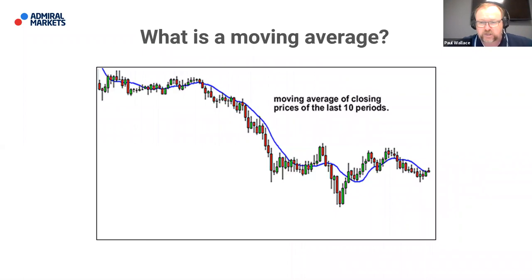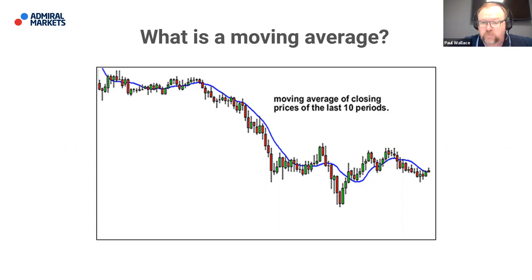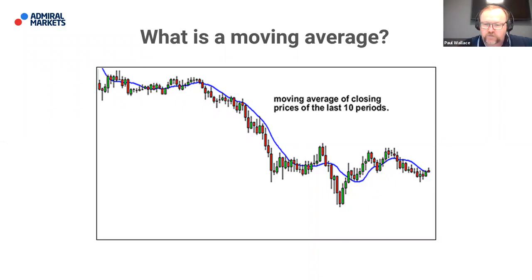For those completely new to trading: what is a moving average? A simple moving average is calculated when a candle closes — it takes the close data. For a 10-period moving average, it takes the last 10 closes, calculates an average of those, and prints that as a line on your chart. That's why it's called a moving average — it's an average of the last 10 closes, constantly moving because every time a candle closes, the average updates and changes direction accordingly.